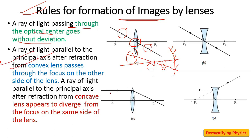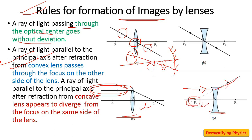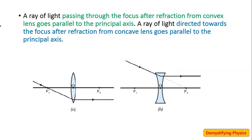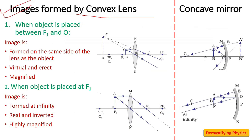The second rule: a ray of light parallel to the principal axis will, after refraction, meet at the focus in the case of a convex lens. For a concave lens, the parallel ray will diverge and appear to come from the focus. The third rule: for a convex lens, a ray passing through the focus will become parallel to the principal axis after refraction. For a concave lens, a ray directed towards the focus will become parallel after refraction.